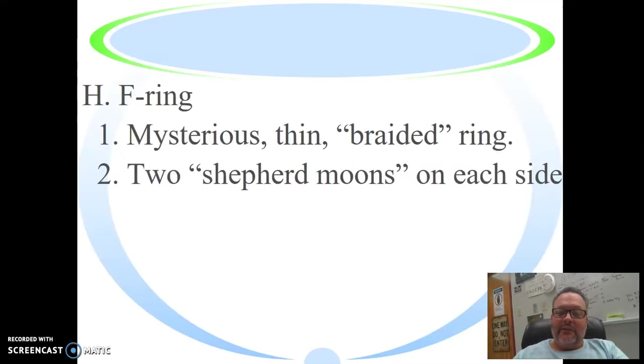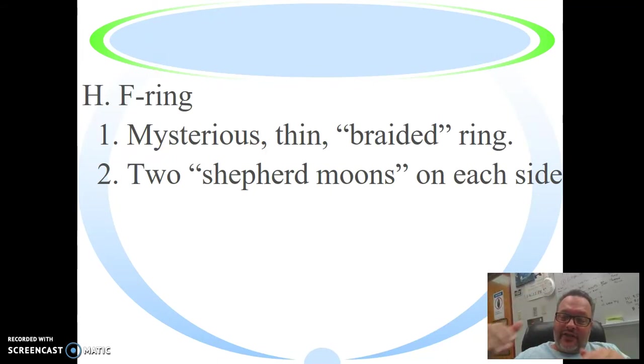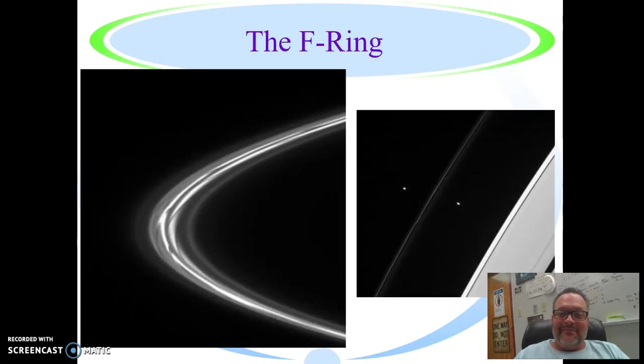Okay, the F ring is really an interesting ring. It's the one that we saw a few minutes ago that just kind of stands out on its own past the main ring system. And for a long time, they didn't understand how is that possible? Why would it be out on its own? How could it sustain itself? And then they discovered there are two really small moons on each side of it that keep that stream of particles in place, kind of like sheep and shepherd dogs keeping the sheep in a line. So that's why they call them shepherd moons, one on each side of the F ring, which is pretty darn cool. There they are. Look at that. You can see them here on the right-hand side. One, two. Those are the two little shepherd moons.